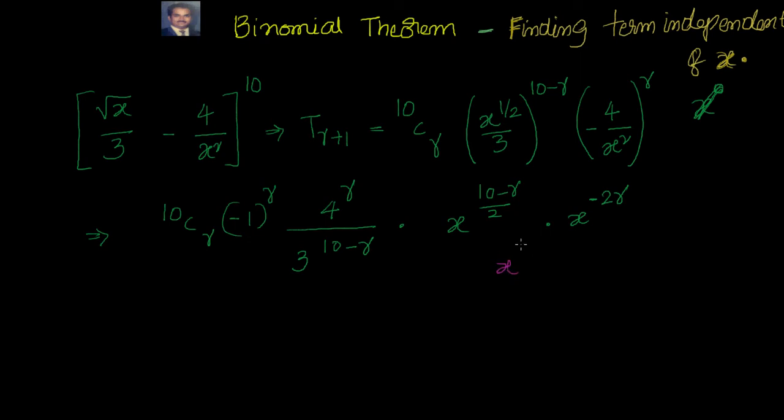That means this is nothing but equal to x to the power of 0. Now let's simplify this. If I simplify this, this is nothing but 10 minus R by 2 minus, can I say this as 4R by 2? So that I can take LCM and equate it to 0 gives me 10 minus 5R equal to 0 and that gives me R equal to 2.